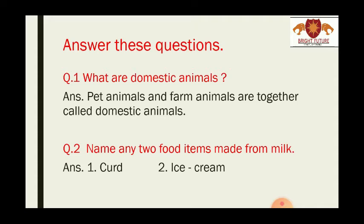It means pet animals which we have in the house, and farm animals. Domestic animals means animals we have in the house. For example, cow — we have cow in the house for milk. Sheep — we have sheep for wool. These animals which we keep in the house are domestic animals.